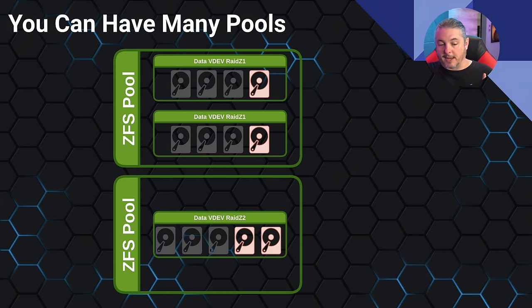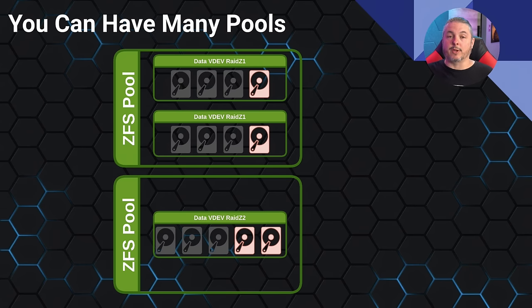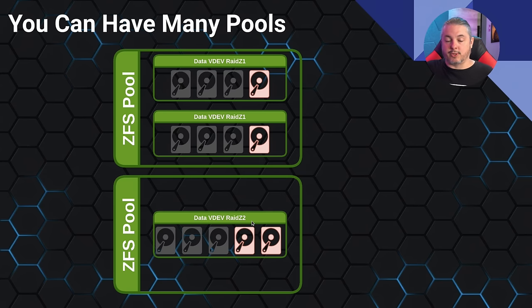You can also just use multiple pools. As we saw in the first slide, datasets are not shared between pools. This is another valid way to expand, applicable to TrueNAS and other systems. This is popular when people started with RAID Z1 and later want RAID Z2. Multiple pools also work well when you have a fast flash pool for virtualization and a spinning rust pool for archival. Two pools also allow easy replication between them for backup purposes — a fast Z1 pool replicating to a larger Z2 pool for archival.